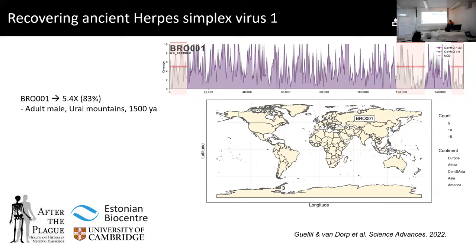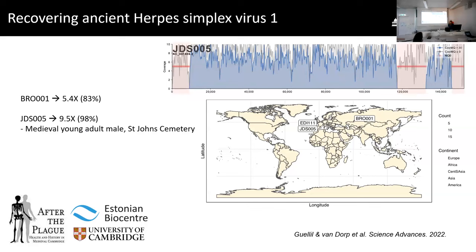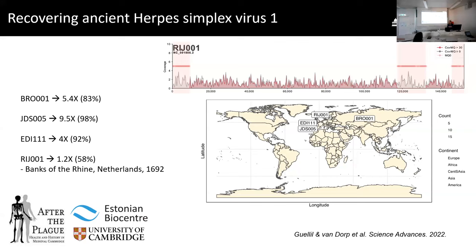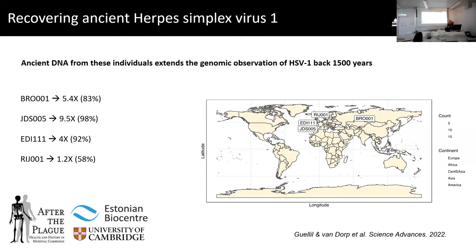We identified four infections from the past. The first was from an adult male from the Ural Mountains in Russia, dating to 1,500 years ago, from whom we recovered an HSV1 genome at 5.4X coverage. Two individuals came from Cambridge: a medieval young adult male from St John's Cemetery site, part of the After the Plague project, yielding a viral genome at 9.5X coverage; and an Anglo-Saxon female from Edix Hill, yielding a 4X genome. A further individual, likely involved in a village massacre on the banks of the Rhine and estimated to have died in 1692, yielded a genome at 1.2X coverage. For most analyses, we took forward the top three higher-coverage genomes.